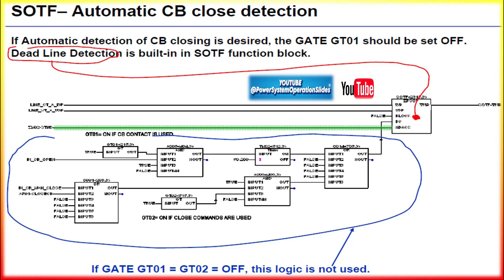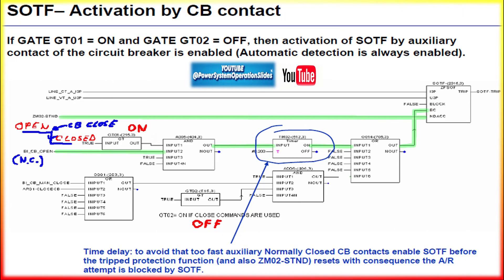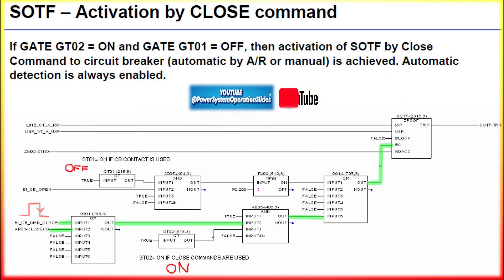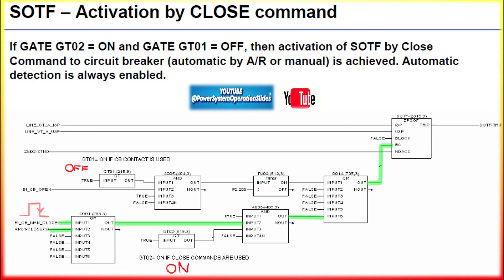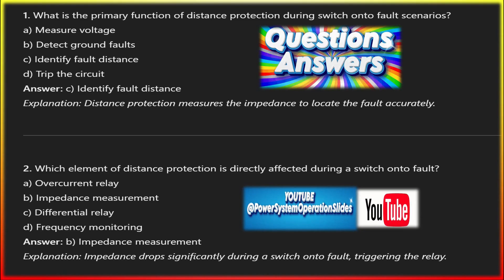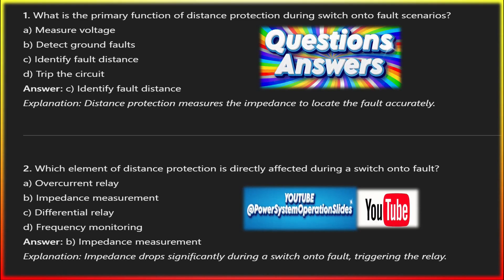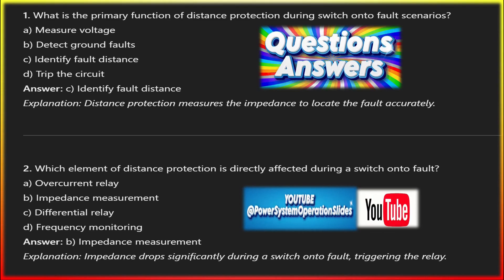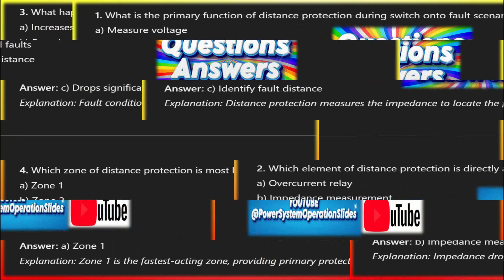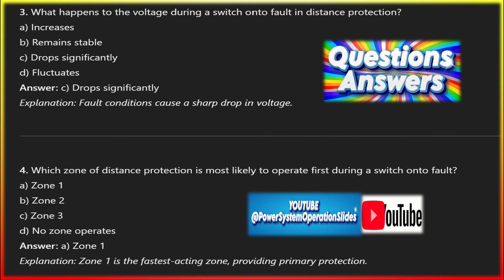In traditional distance protection schemes using impedance zones, the relay measures the impedance of the transmission line between itself and the fault. Different zones of protection — Zone 1, Zone 2, Zone 3 — correspond to various portions of the line. For instance, Zone 1 is typically instantaneous and protects a certain percentage of the line, typically 80 to 90 percent, while Zone 2 protects the remainder of the line with some time delay. Zone 2 and Zone 3 typically have a time delay to ensure selectivity so the nearest breaker operates first and distant breakers only operate if the fault persists. However, with SOTF, the delay mechanisms are bypassed to provide instantaneous tripping, ensuring that the fault is cleared without waiting for the impedance zones to determine the fault location.